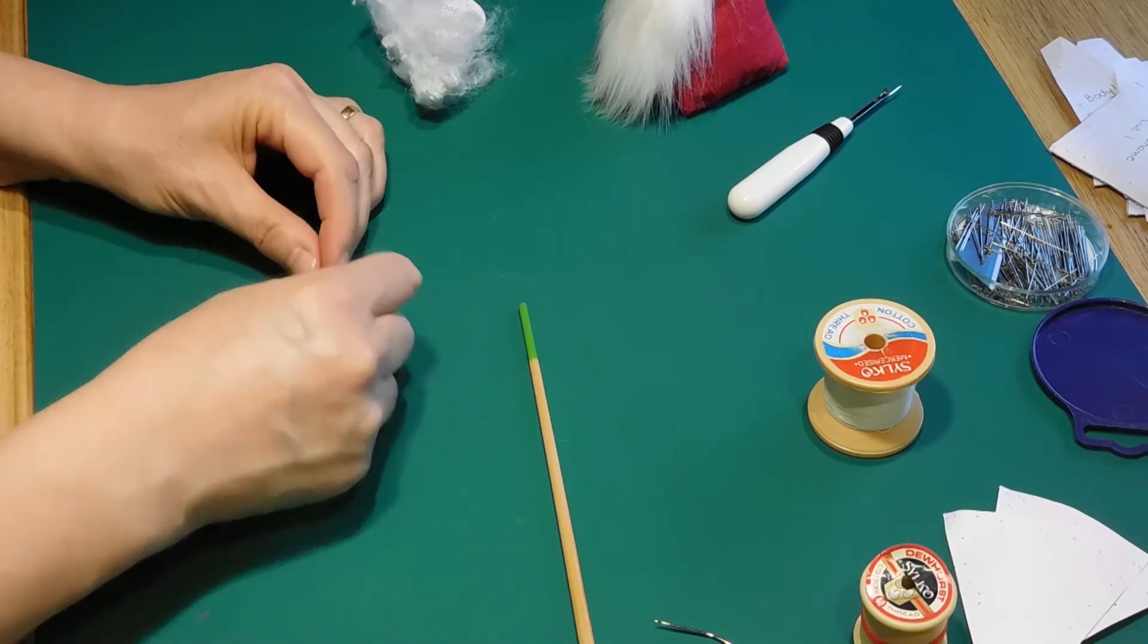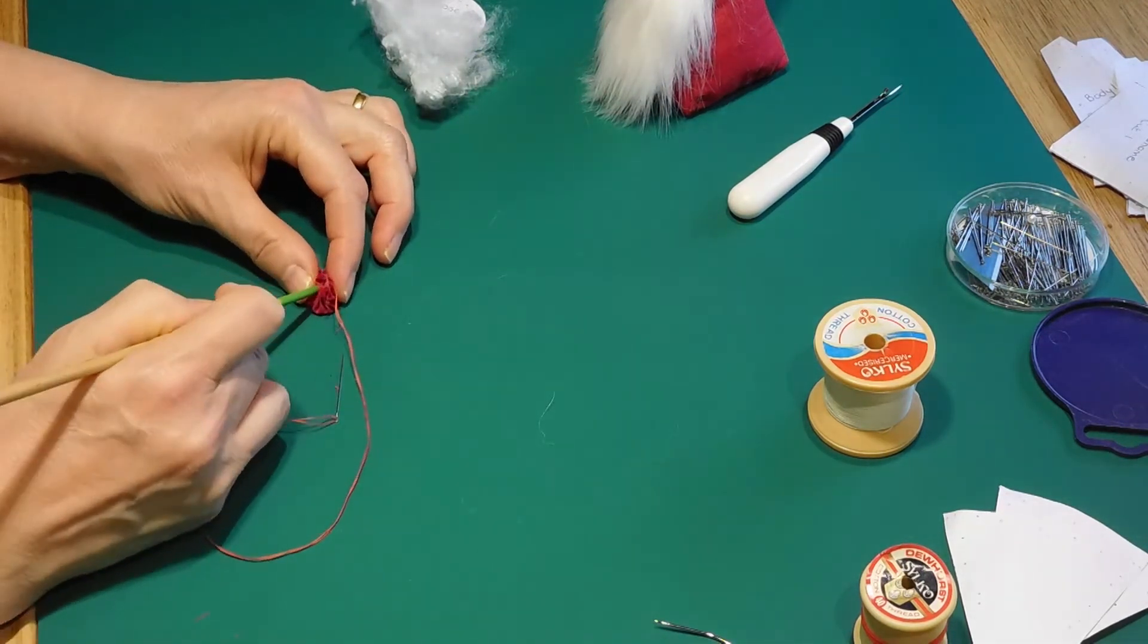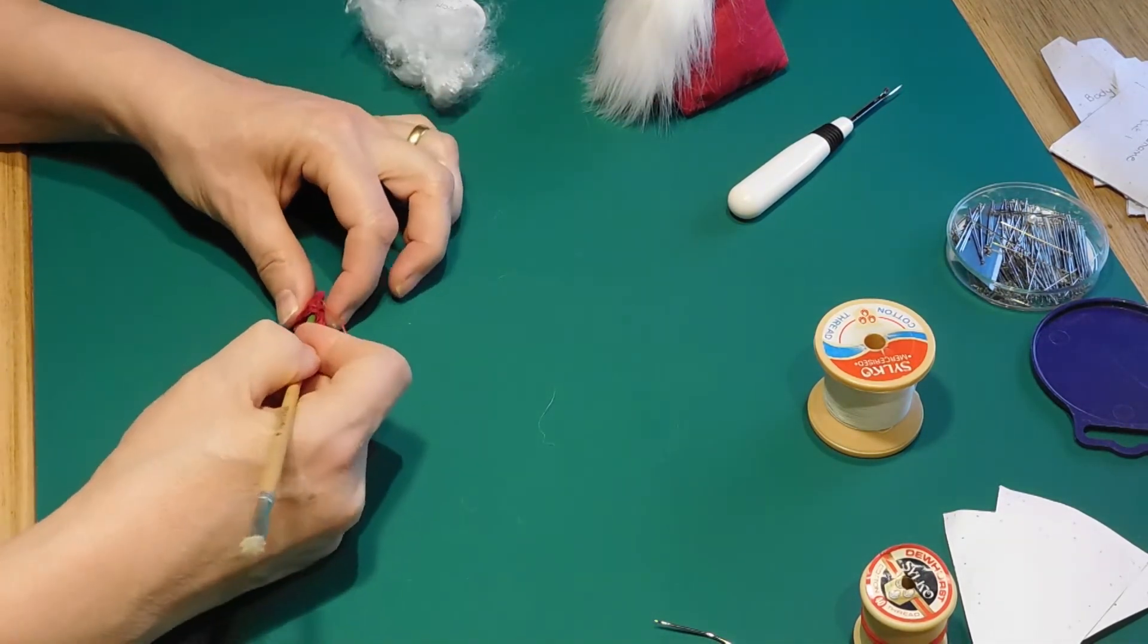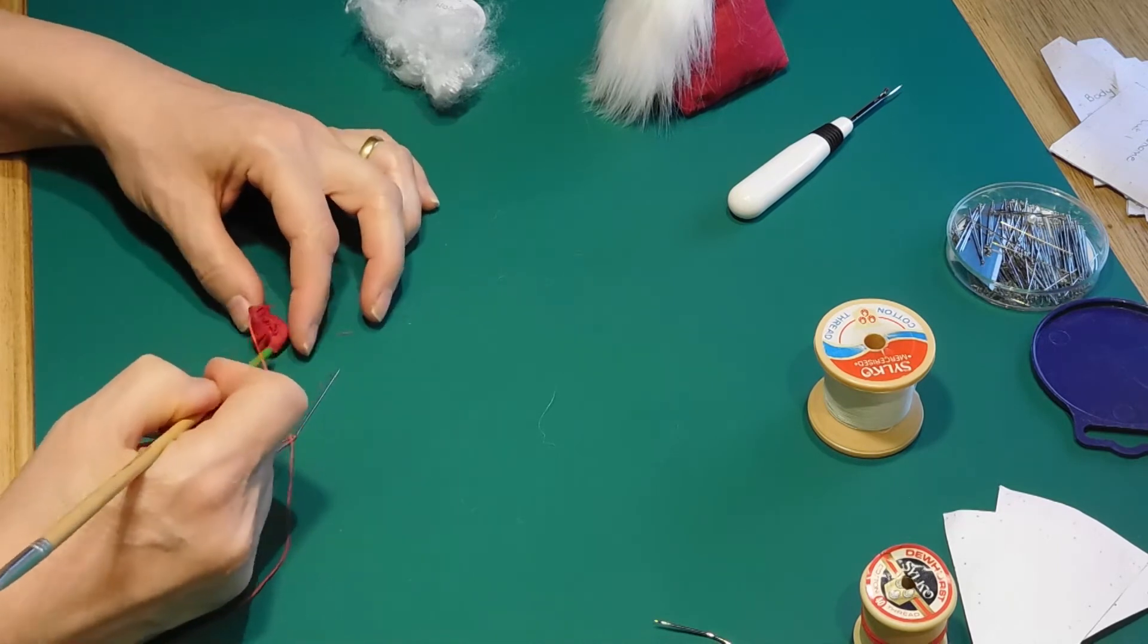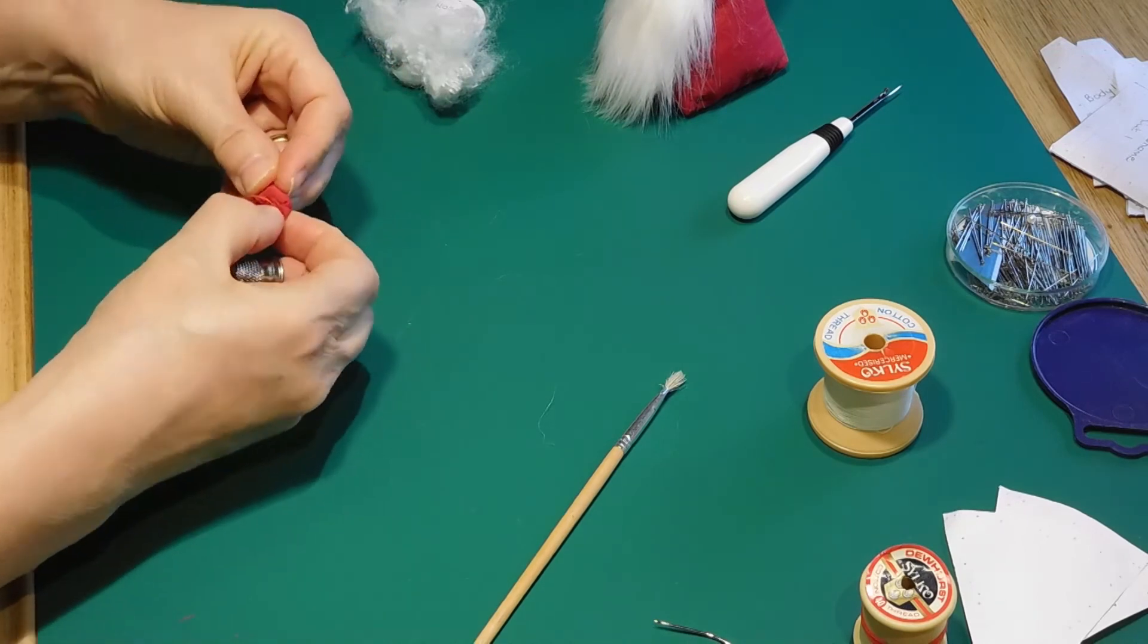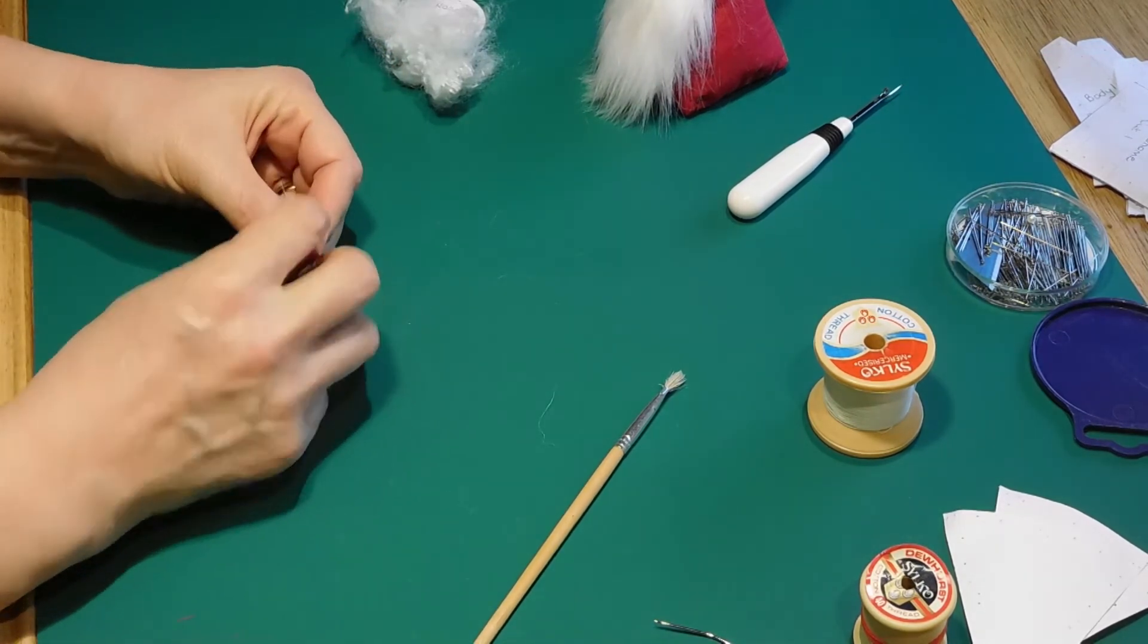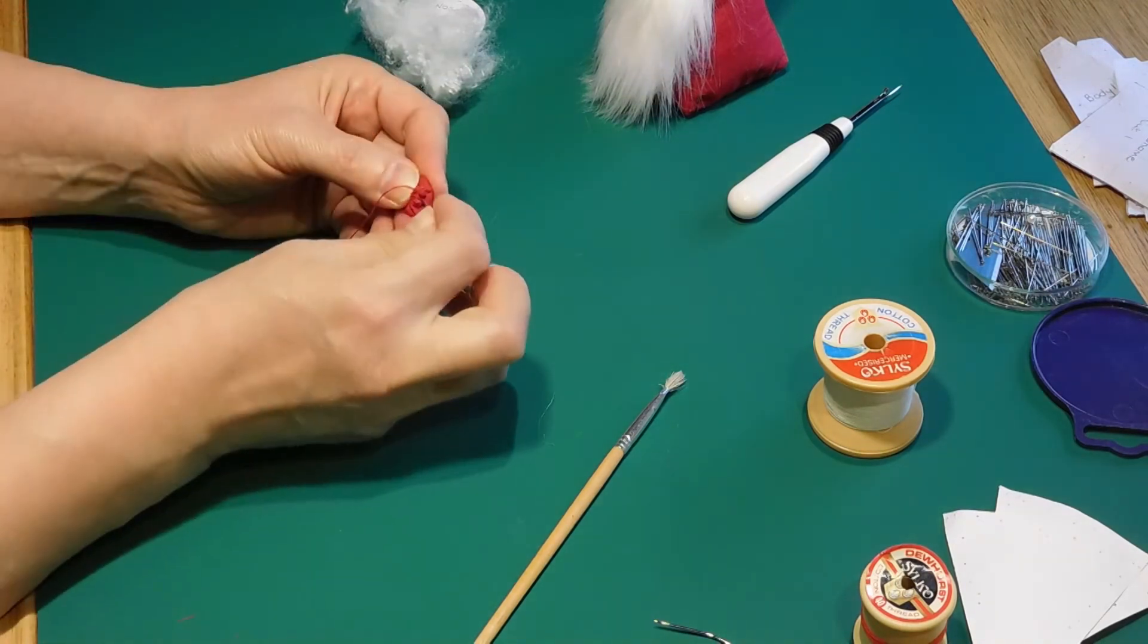Pull the thread up tightly when the allowance is inside the shape and fasten off the thread, but don't break it. As with the neck, take a stitch across the back of the nose shape and pull it tightly, securing the thread again. Do this a few times until you have produced a somewhat spherical shape.